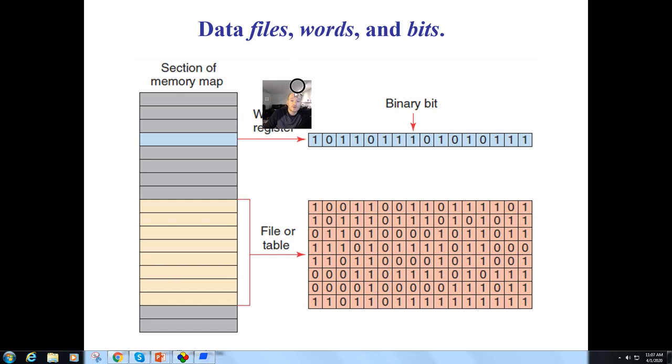Now, remember we have our binary bits, which are typically identified with a forward slash. Then we have our full words, sometimes referred to as a registry, sometimes referred to as integers and double integers. And then we have a full table or file.